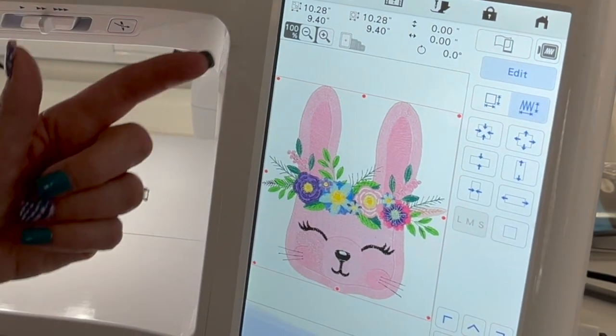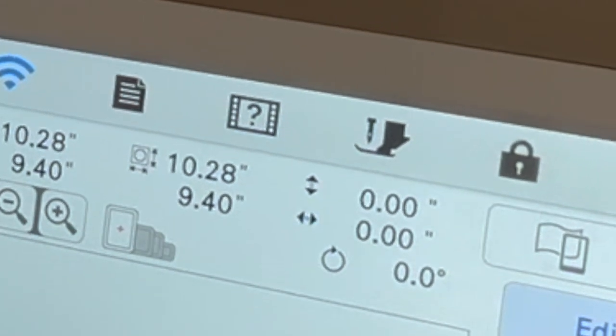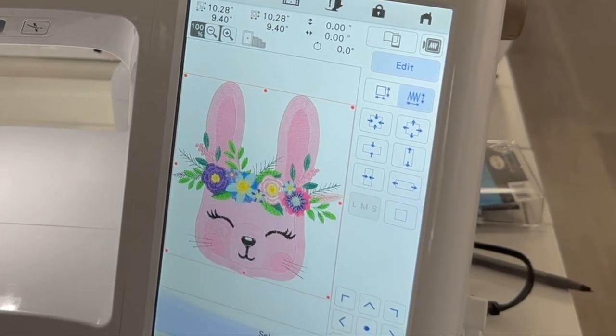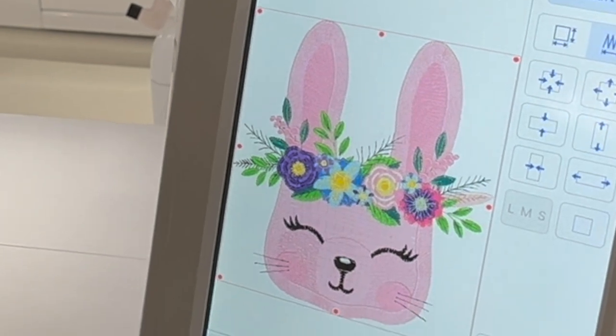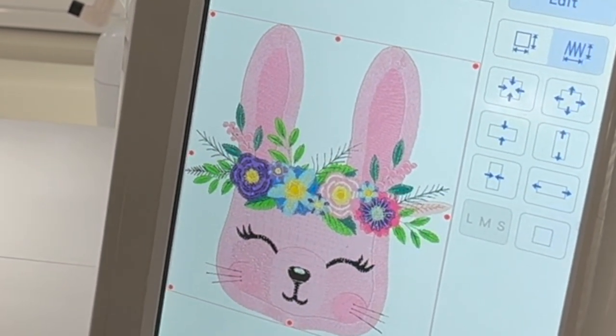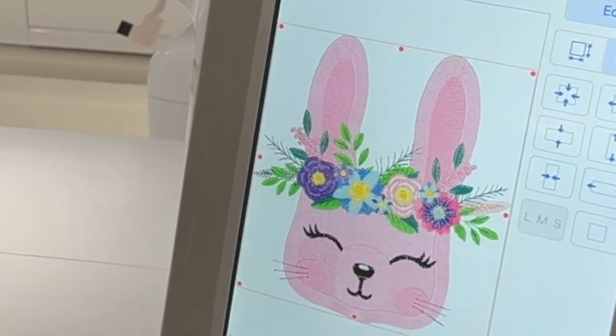So at this point you can see we've got one that's about 10 and a quarter by almost nine and a half inches which is a really good sized bunny that maybe you'd want to put on the back of a Levi jacket. But again at this point it does change the density so that you're not going to have spots or areas inside the design that don't have any stitches.